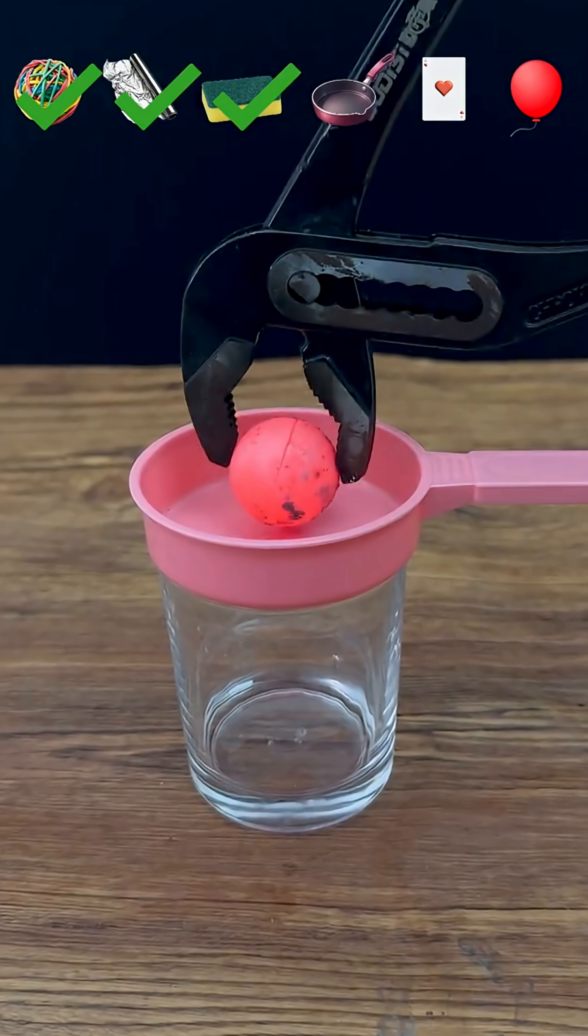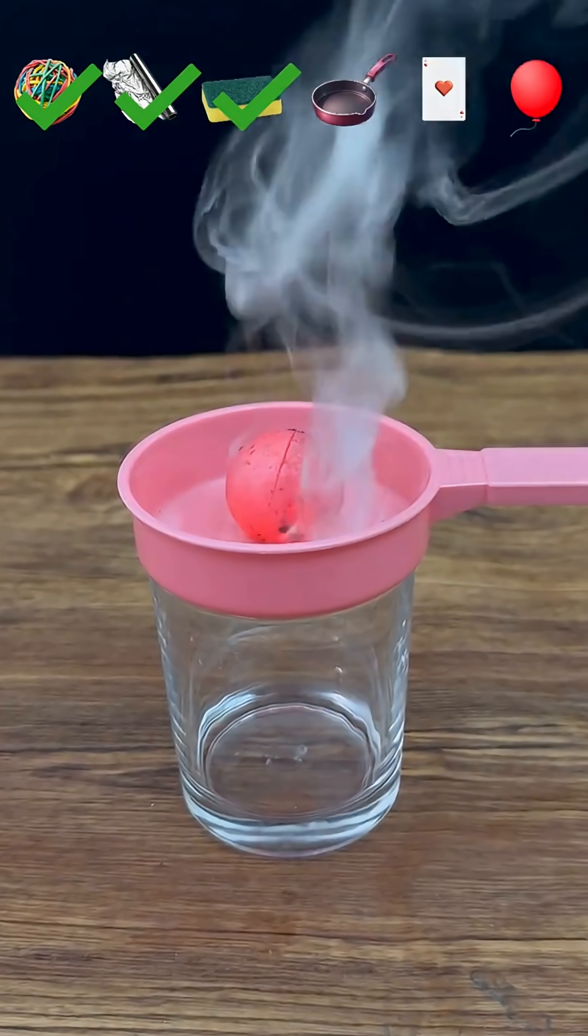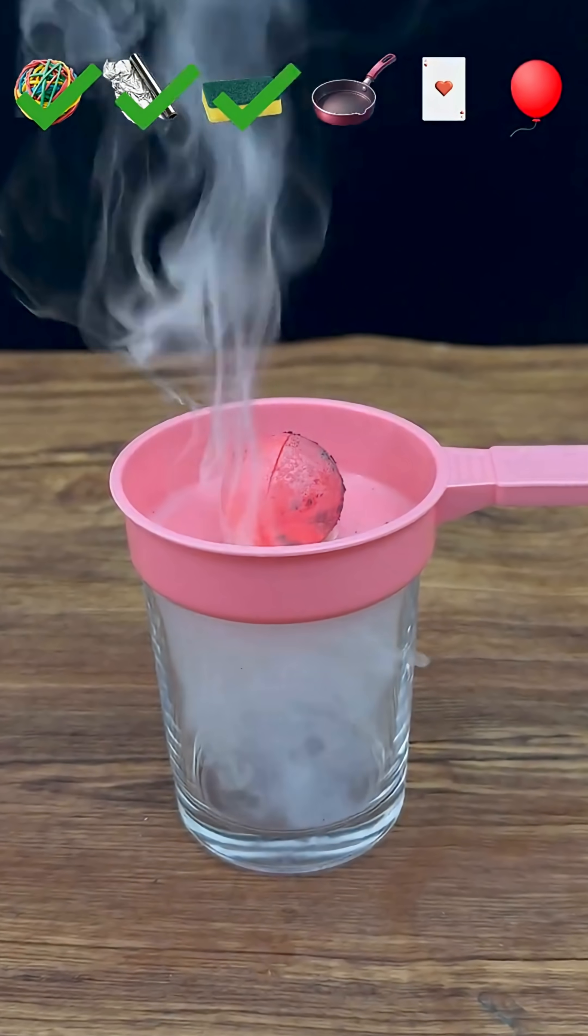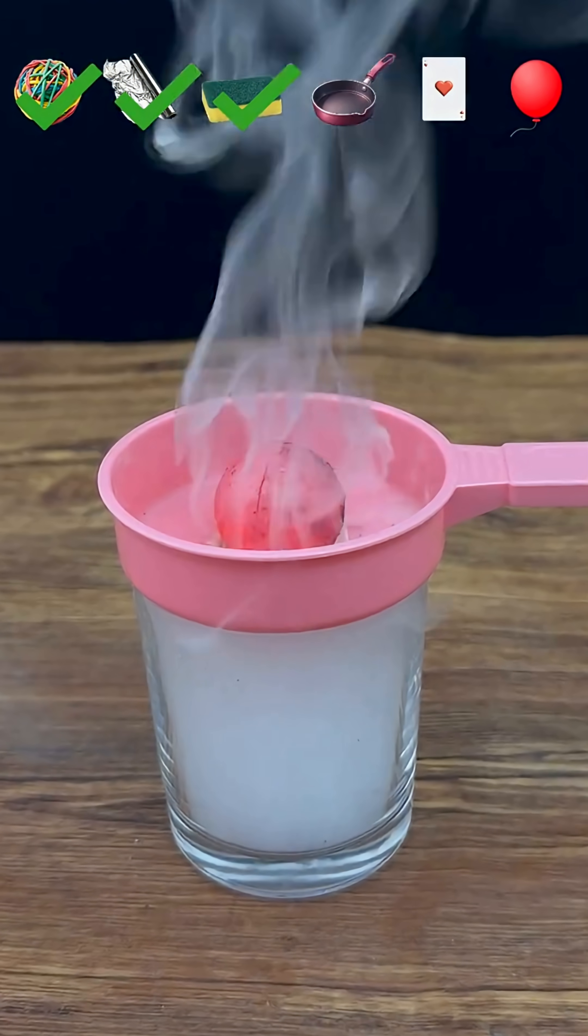Our third test is with an ordinary kitchen sponge. The instant the hot ball touches the sponge, it combusts. A tall, intense pillar of flame erupts as the porous material is set alight.